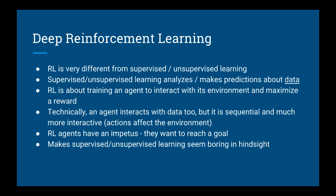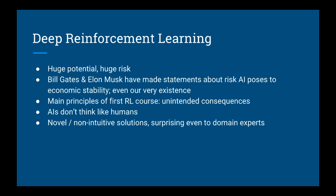This is such a fascinating perspective, it can even make supervised and unsupervised learning seem boring in hindsight. Why train a neural network to learn about the data in a database, when you can train a neural network to interact with the real world? While deep reinforcement learning in AI has a lot of potential, it also carries with it a huge risk. Bill Gates and Elon Musk have made public statements about some of the risks that AI poses to economic stability and even our existence.